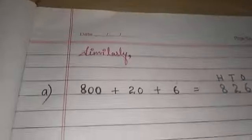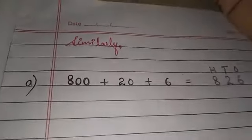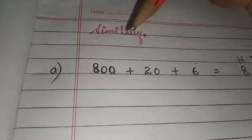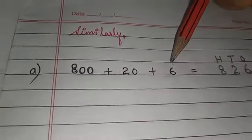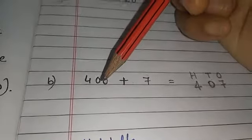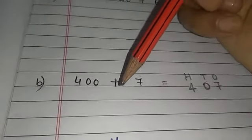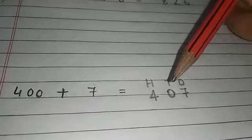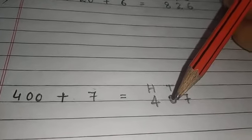See, over here you have got all the consecutive place values: hundreds, tens, and ones. But here, you don't have this tens place value. So in place of tens, we write down 0.